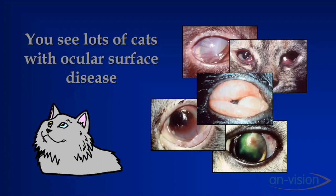I know that you all see a lot of cats with ocular surface disease. It might be this young kitten with the upper respiratory disease and bilateral conjunctivitis. It might be the older cat with a non-ulcerative, insidious stromal keratitis — some antigen residing in the corneal stroma, just drawing out inflammation in a slow and very hard-to-resolve manner. It could be that cat with massive chemosis and hyperemia, or the chronic grumbling conjunctivitis, or the cat with sequestrum or eosinophilic keratitis.